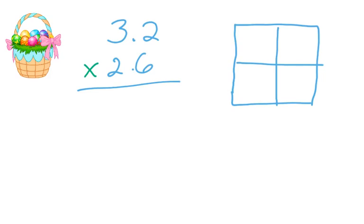So I want to look at this problem, 3.2 times 2.6. And in standard algorithm, you multiply them as if they're whole numbers, but you need to keep in mind that that is not at all what you're doing. That's just how we get to the answer, okay?